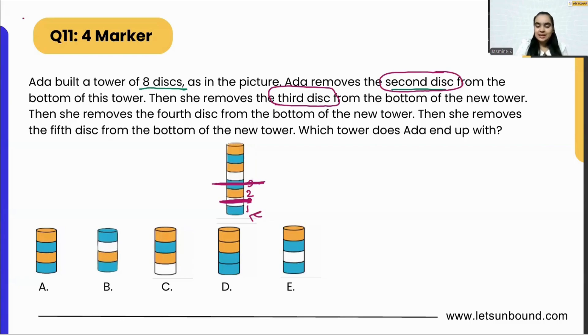Now there will be six discs, right? So one, two, three, four, five, and six. Moving on, then she removes the fourth disc from the bottom of the new tower. That means now we will remove this fourth disc.